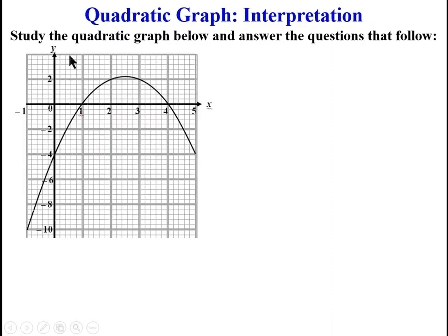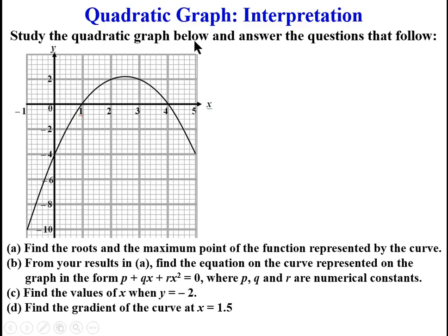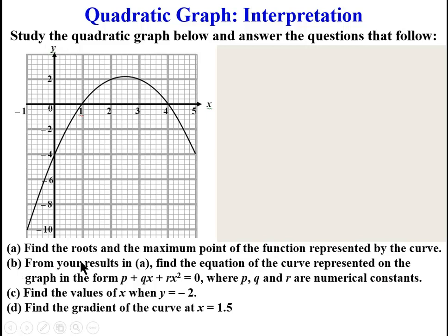So we take the problem: study the quadratic graph below and answer the questions that follow. A: find the roots and the maximum point of the function represented by the curve. B: from your results in A, find the equation of the curve represented on the graph in the form P plus QX plus RX squared is equal to 0, where P, Q and R are numerical constants.